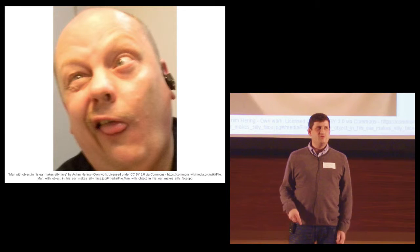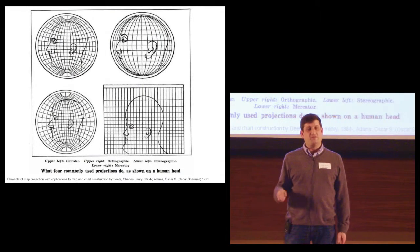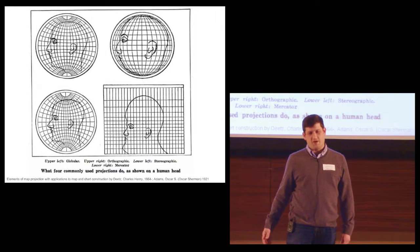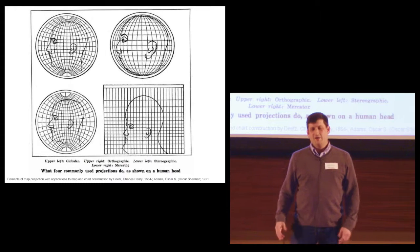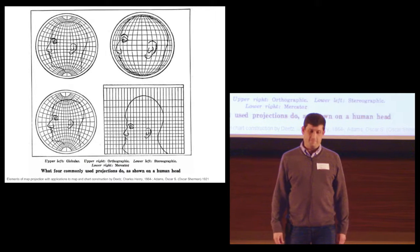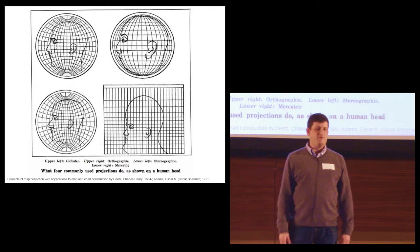This was cleverly used in a 1921 book to show the effects of various projections, with some pen and ink drawings. Here you can see the Mercator projection in the bottom right. It's a really distended human. But this doesn't feel viscerally wrong like a distorted human photograph does.